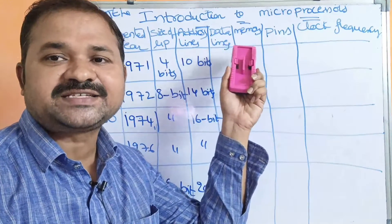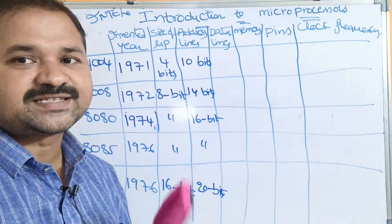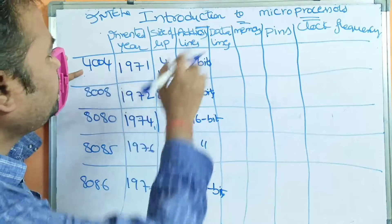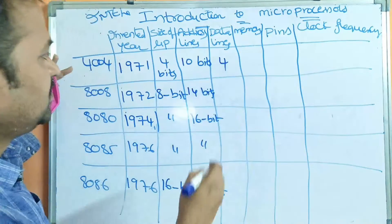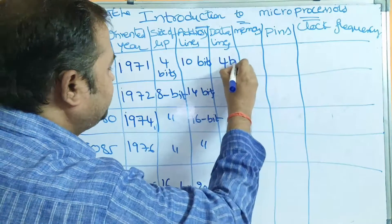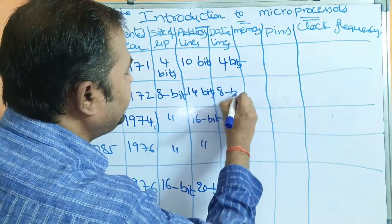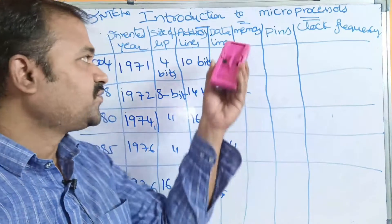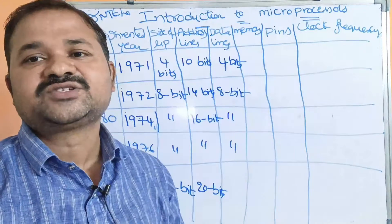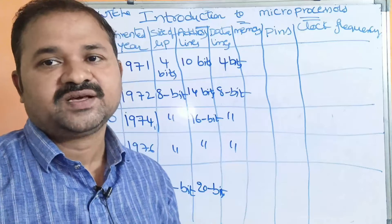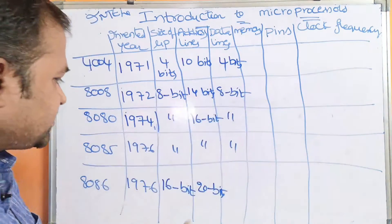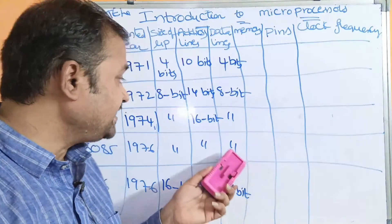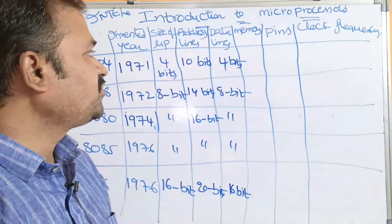Data lines is similar to the size of the microprocessor — how many data lines it uses. 4004 uses 4 data lines, meaning it performs operations on 4-bit data and the register size is 4 bits. 8008, 8080, and 8085 use 8 data lines. 8086 uses 16 data lines.